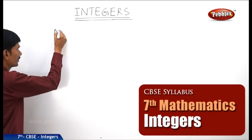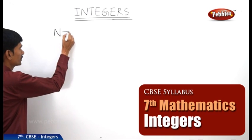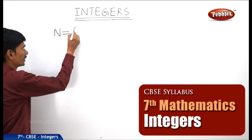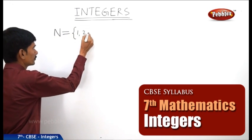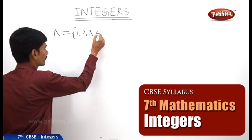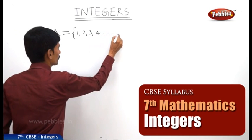The set of natural numbers is denoted by N: 1, 2, 3, 4 and so on.